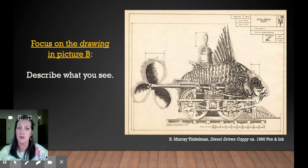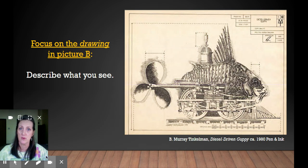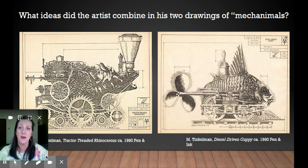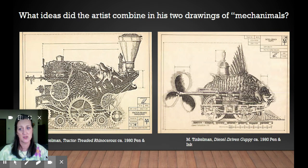Focus on the drawing in picture B by Murray Tinkleman. Describe what you see. What ideas did the artist combine in his two drawings of mechanimals? These are both by Murray Tinkleman.